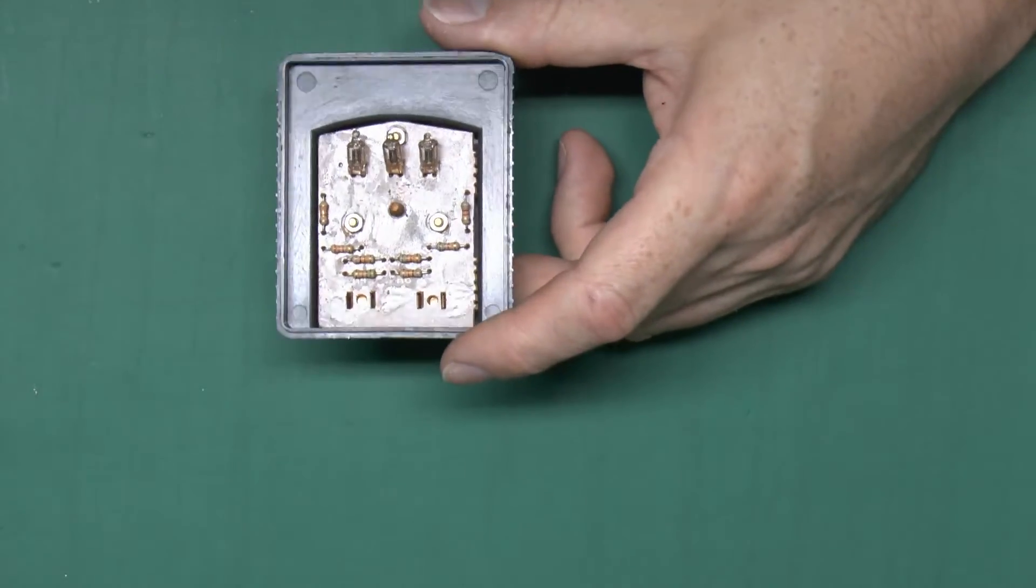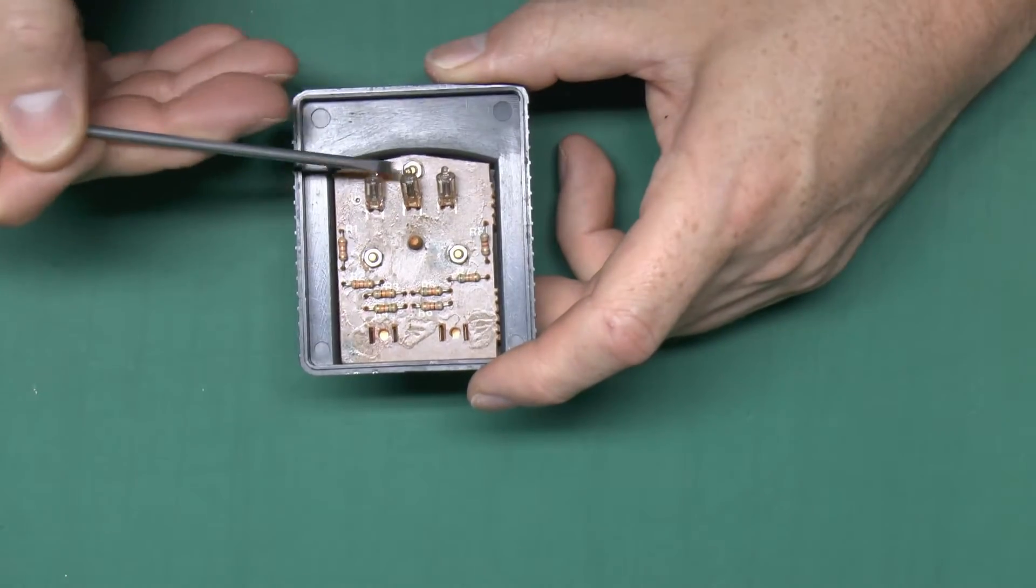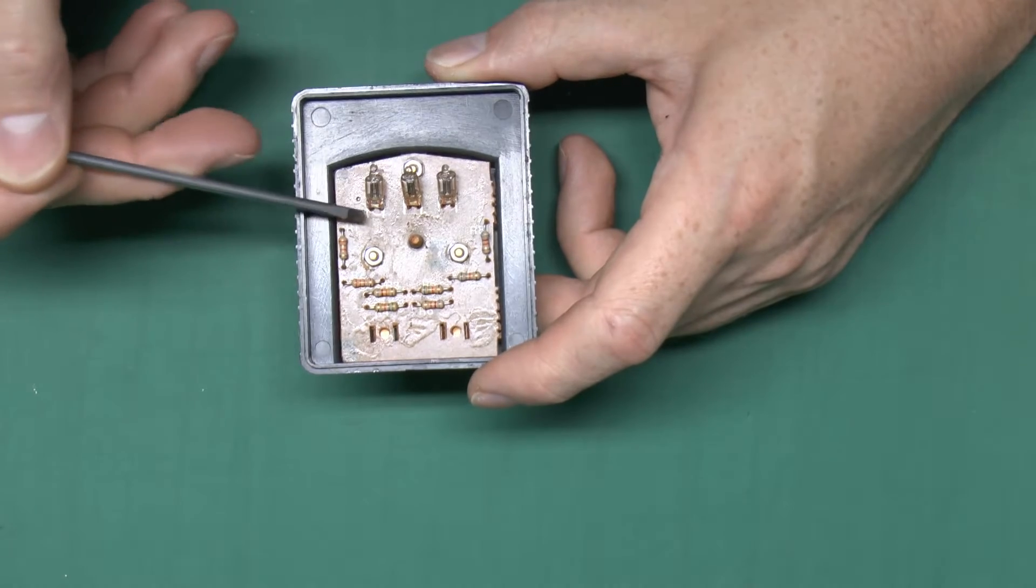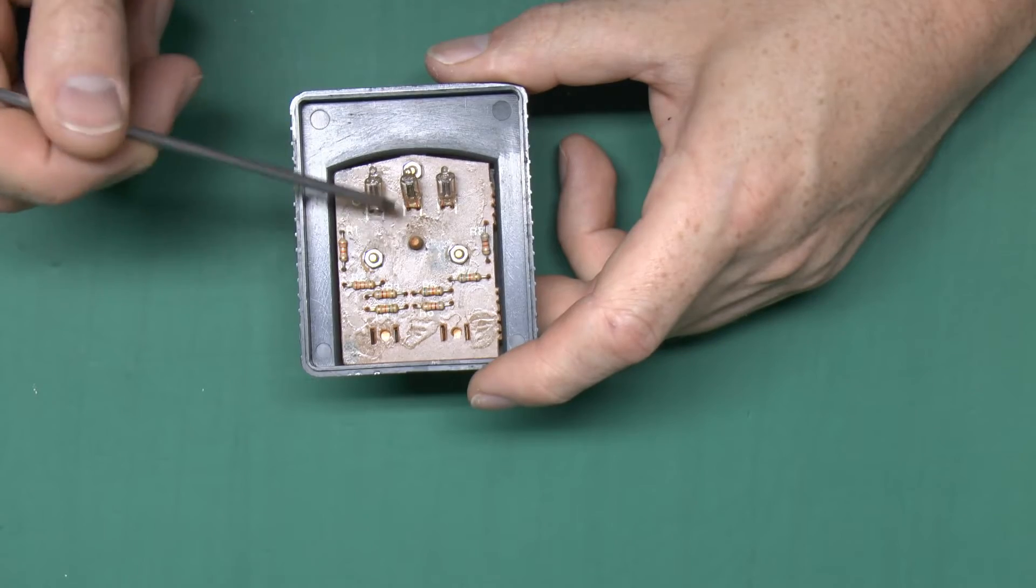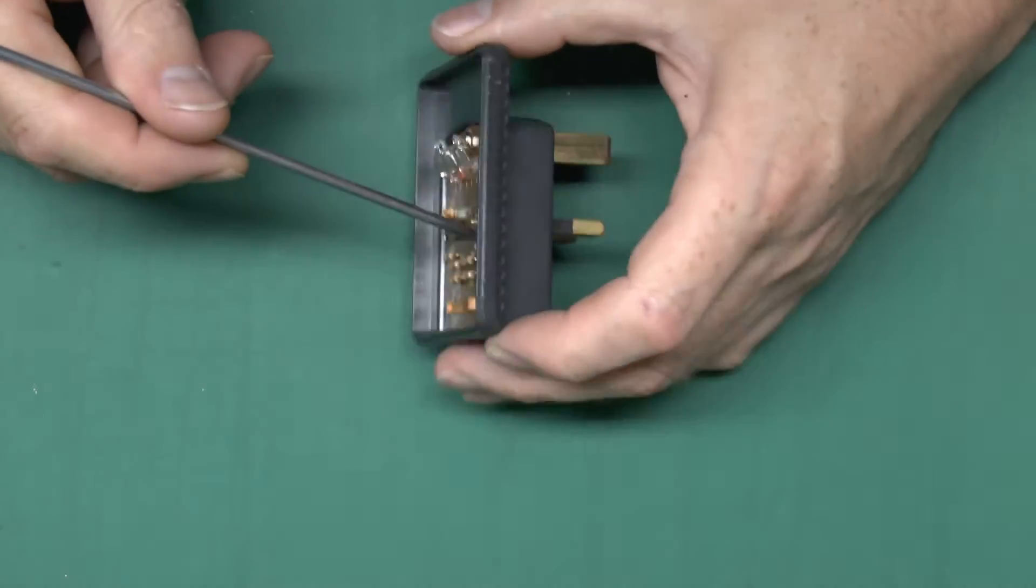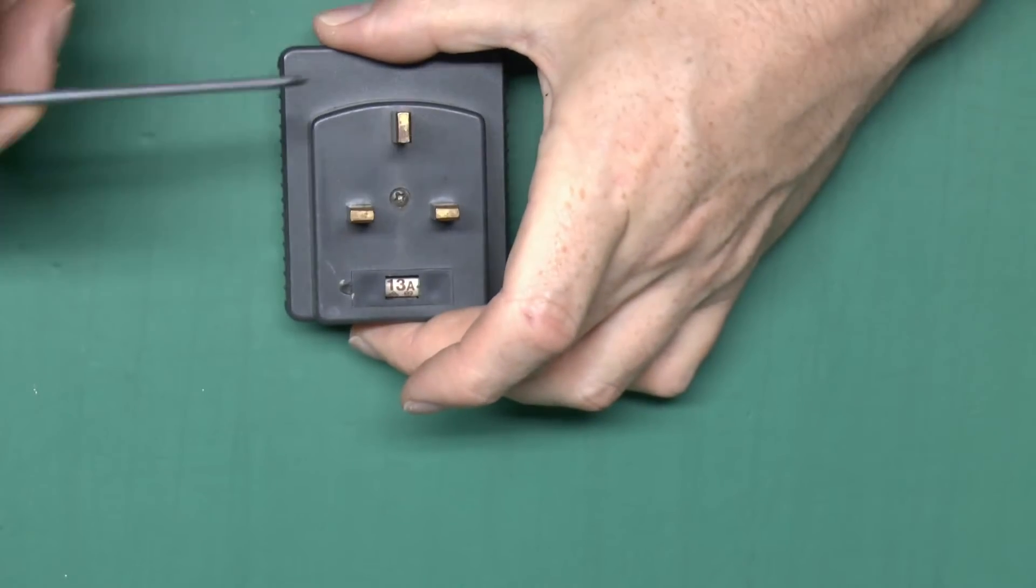And then inside the device, really nothing at all, just the three small neon lamps there and a few resistors and then these are the incoming terminals, line neutral and earth there. Those just go straight through in the corresponding pins on the back.